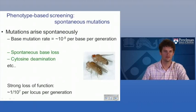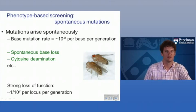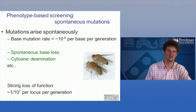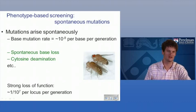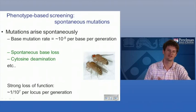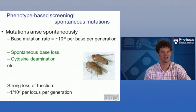The simplest way to induce mutations is to just let them happen spontaneously. Mutations are fairly common — about 10 to the minus 8th per base, which means there's going to be some loss-of-function mutation in any given gene about one in 10 to the 7th. Mutations occur spontaneously due to damage like base loss or cytosine deamination, and also through errors in DNA replication.